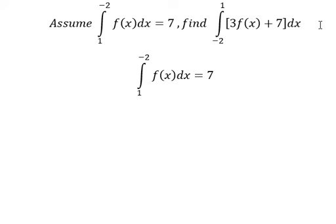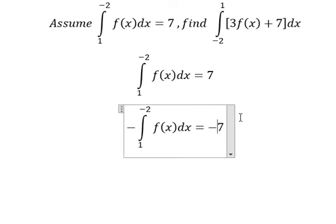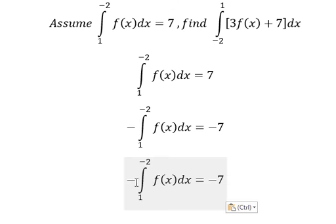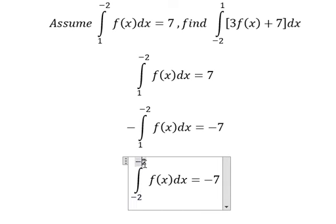So in this situation, I will put the negative sign for both sides. With the negative, we can swap the top and the bottom together. So we have the integration from negative 2 to positive 1.